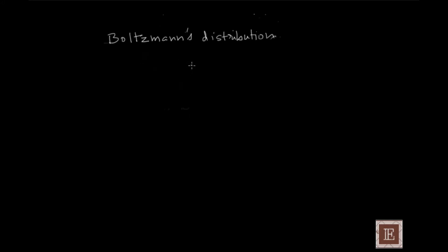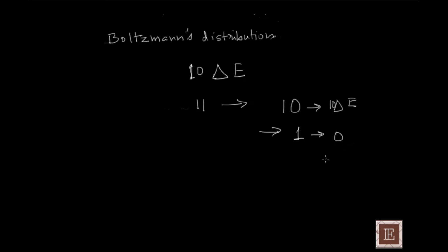If 10 particles occupy energy state e1, nothing is stopping another two particles from occupying the same energy state. The only caveat is that particles occupy that energy state at the expense of the total energy of the system. So if the total energy of the system is 10δe and you have 11 particles, nothing stops 10 from having energy 10δe, but then the remaining one particle must be at energy state zero.